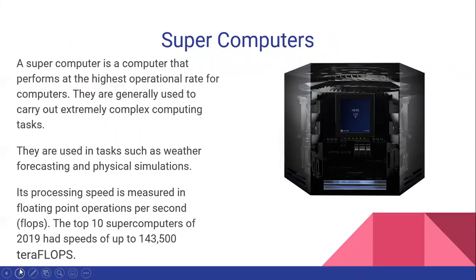A supercomputer is a computer that performs at the highest operational rate for computers. They are generally used to carry out extremely complex computing tasks, and because of this, we often find them in the fields of science. They are used in tasks such as weather forecasting, climate research, and physical simulation. Processing speed is measured in floating point operations per second (FLOPS). The top ten supercomputers in 2019 had speeds of up to 143,500 teraflops. Supercomputers require an extremely large storage system, and because of the great expense associated with this type of computer, they are usually found in research environments and large specialist organizations.